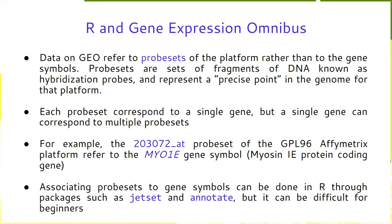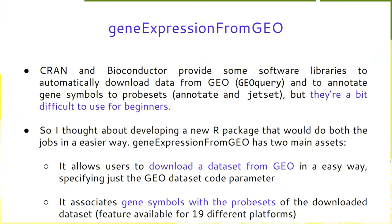The usage of existing packages like jitset and annotate can be a bit difficult for beginners. On CRAN and Bioconductor there are software libraries that automatically download data from GEO — in particular GEOquery, which is quite widely used. There are also other libraries such as annotate and jitset to annotate gene symbols to probe sets, but they are difficult for beginners because they have many fields, and the object that comes out of GEOquery has a complex list structure that may not be easy to understand.